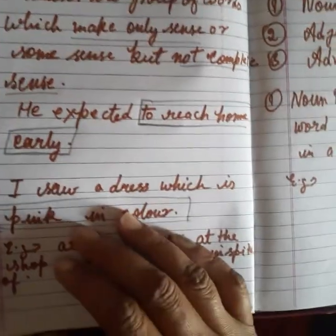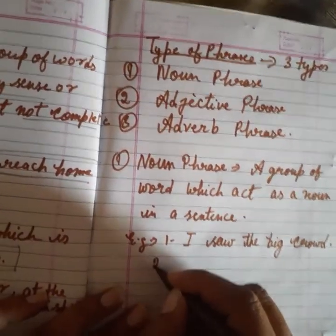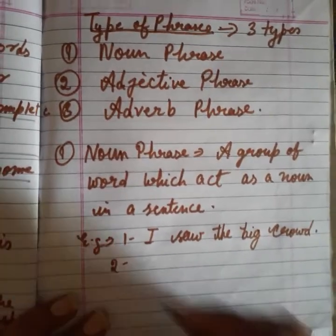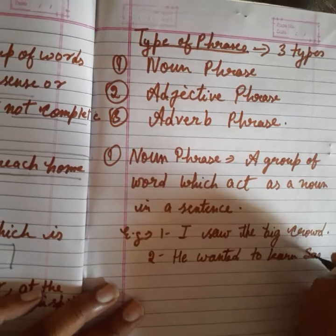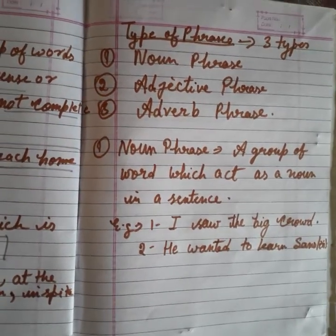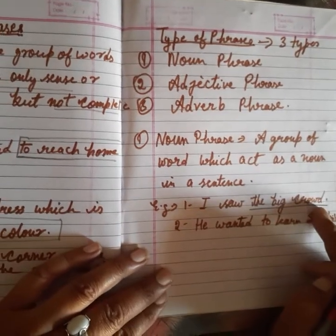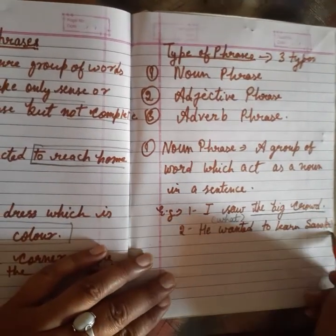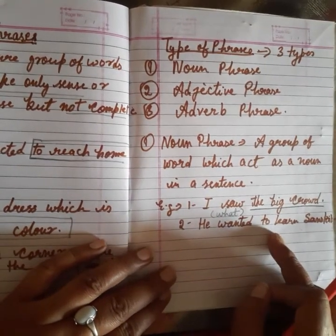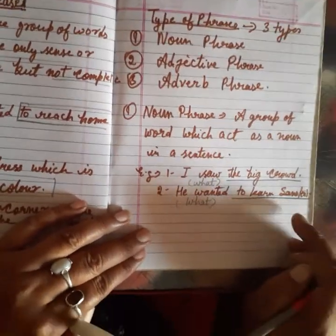Further examples of noun phrase: 'I saw the big crowd' — मैंने क्या देखा? मैंने एक big crowd देखा। तो 'the big crowd' यहाँ पर noun की तरह act कर रहा है — यह noun phrase है, 'what' लगा के answer मिल रहा है। Similarly, 'he wanted to learn Sanskrit' — what he wanted to do? तो 'to learn Sanskrit' यहाँ पर noun phrase हो गया।